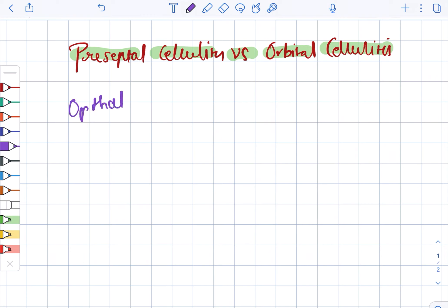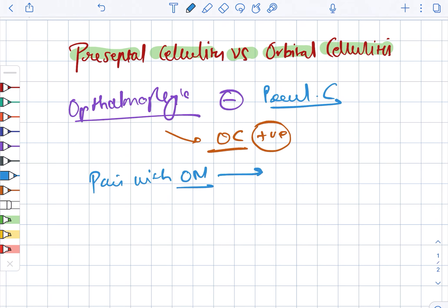Preceptal cellulitis versus orbital cellulitis. Looking at the signs and symptoms, in case of ophthalmoplegia, it is absent in preceptal cellulitis, whereas in orbital cellulitis it is positive.